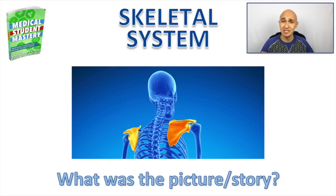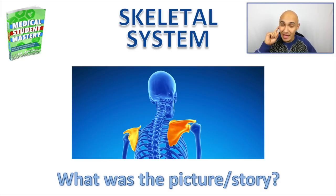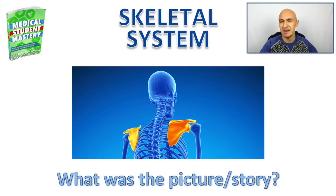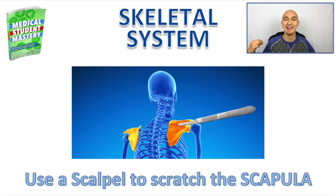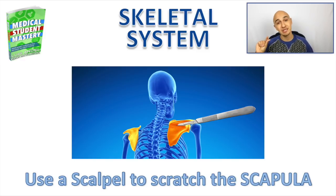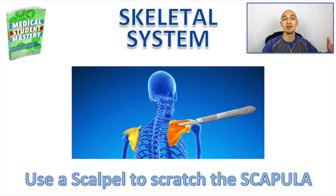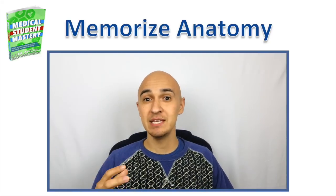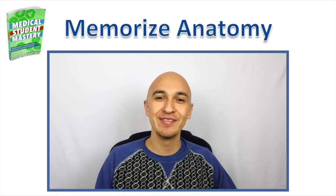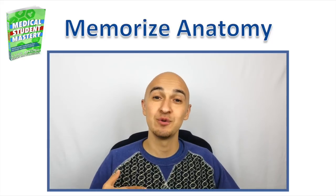When they're quizzing you on what a particular part of the body or skeleton is, ask yourself what was the picture or story that you created — not necessarily the name itself, but just the picture and story, because that's going to help you trigger the actual name. In this case, we picture the scalpel scratching the scapula, then turn the scalpel image back into the name: scapula. Use your creativity to come up with these associations for the anatomy and body parts you want to remember.